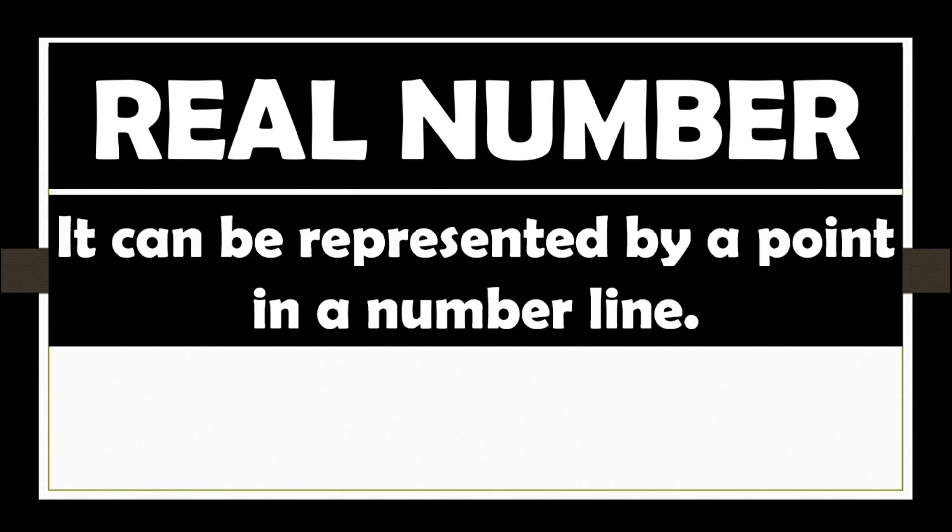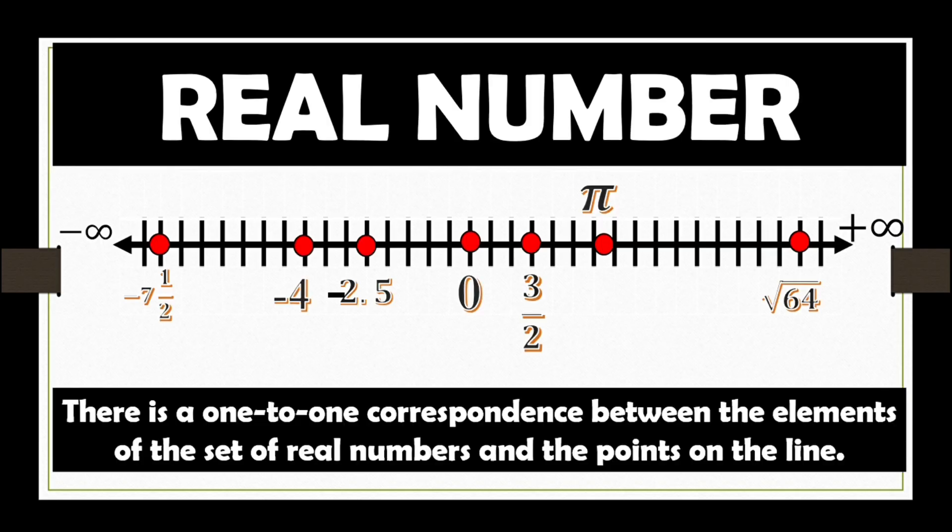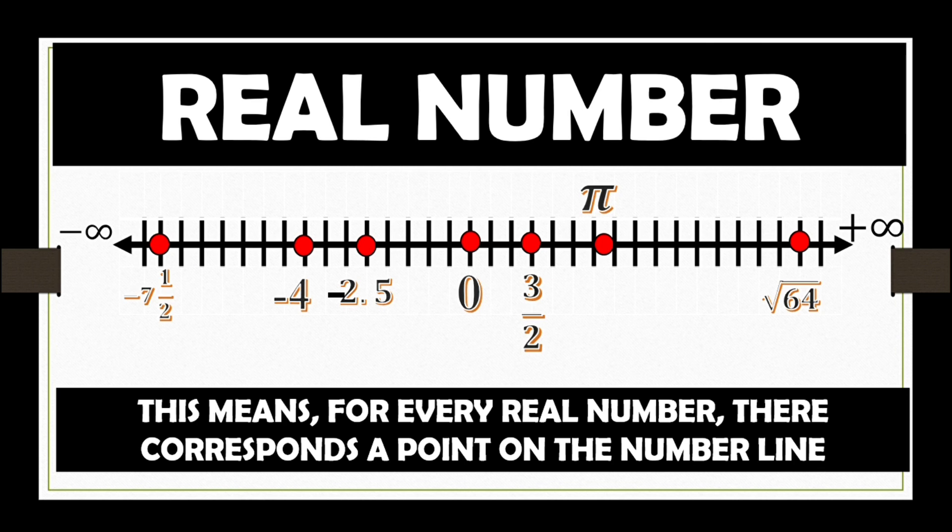It can be represented by a point in a number line. So, bear in mind, there is a one-to-one correspondence between the elements of the set of real numbers and the points on the line. This means, for every real number, there corresponds a point on the number line.